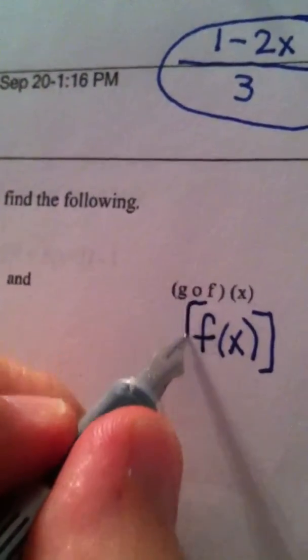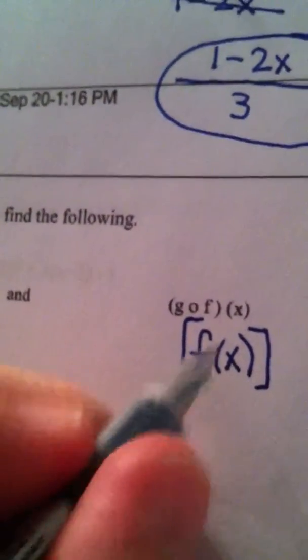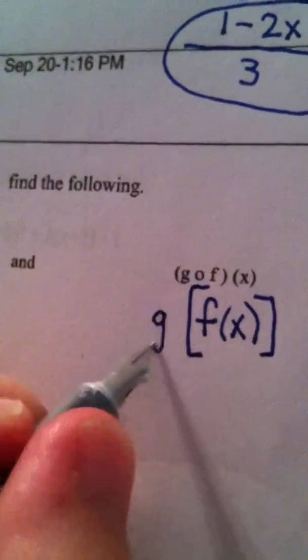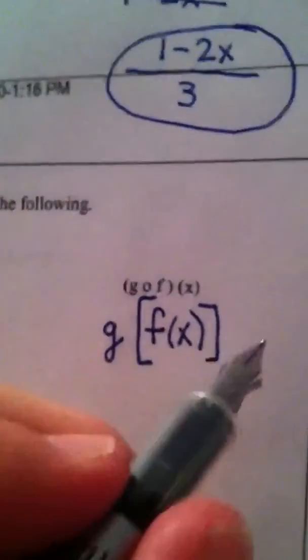You okay down there, Trevor? I take, I find f of x to start with, and then I put that answer into g.